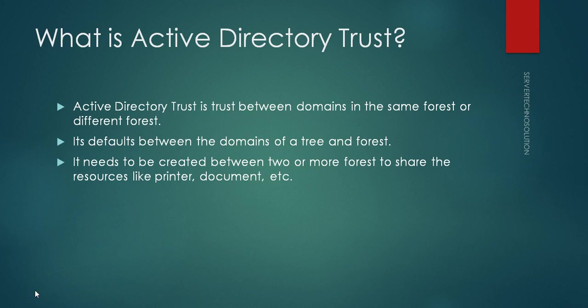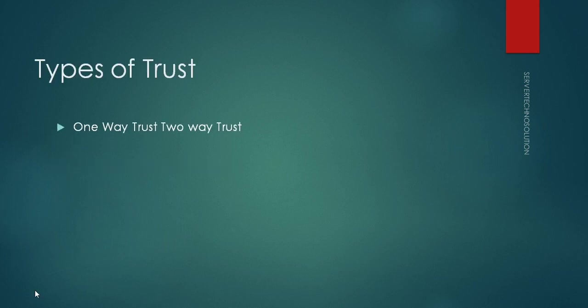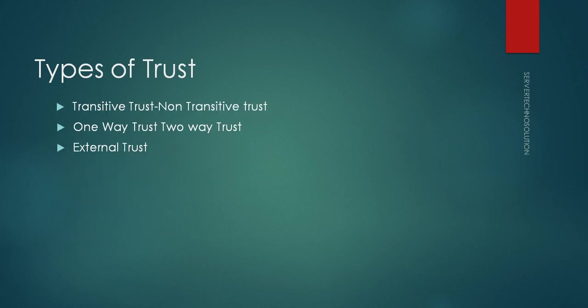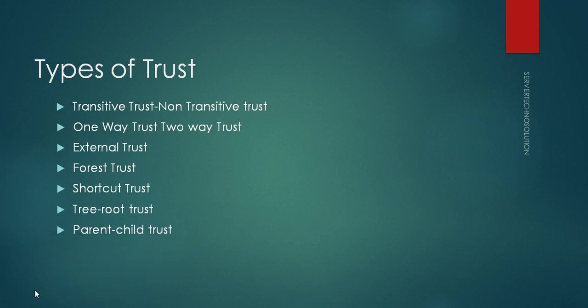When it comes to two different forests or domains of different forests, we need to manually create the trust. There are two kinds: default trust, which exists automatically, and trust that we need to create. The types of trust are: one-way trust, two-way trust, external trust, transitive trust, non-transitive trust, forest trust, shortcut trust, and parent-child trust.